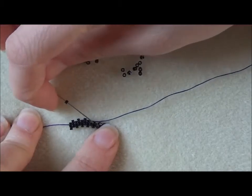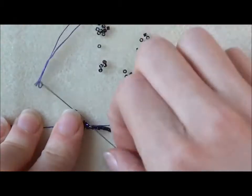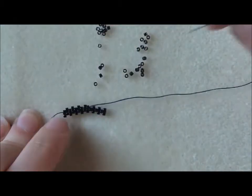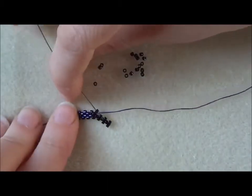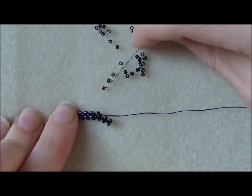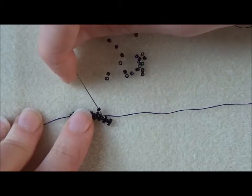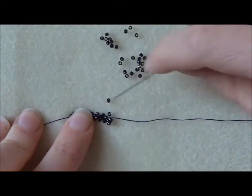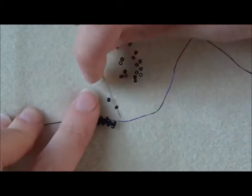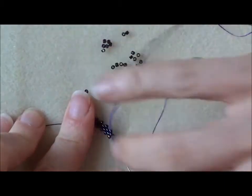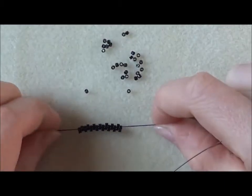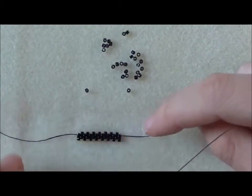So that's how you get started with your odd count peyote stitch. That's the third row complete.